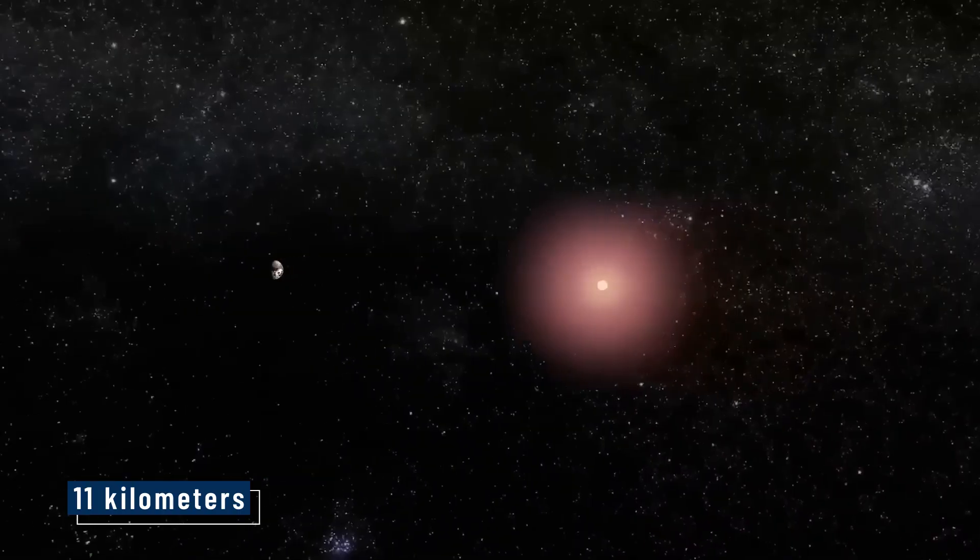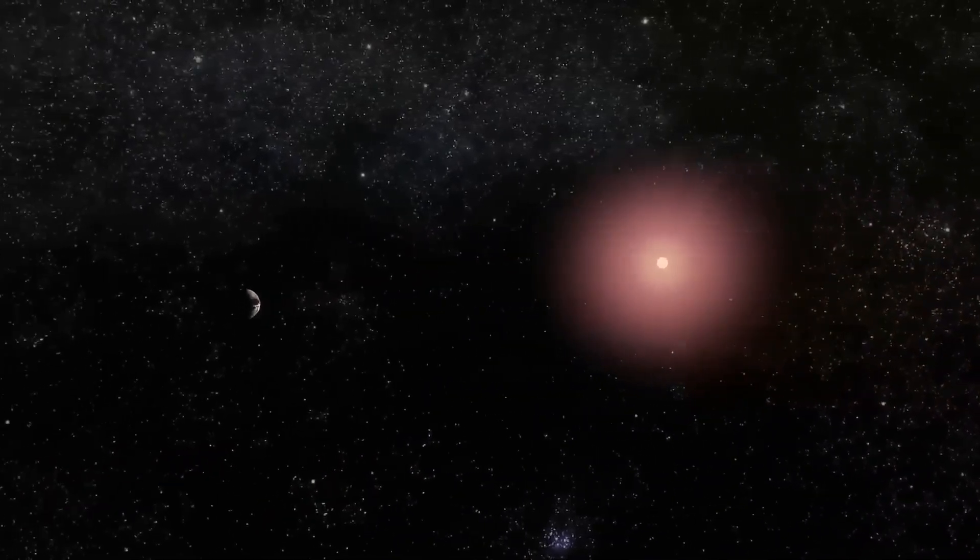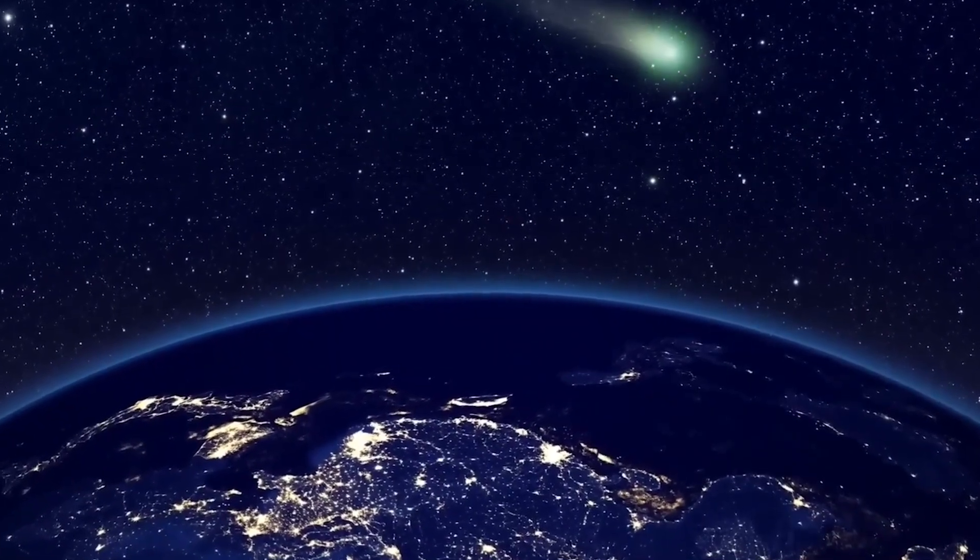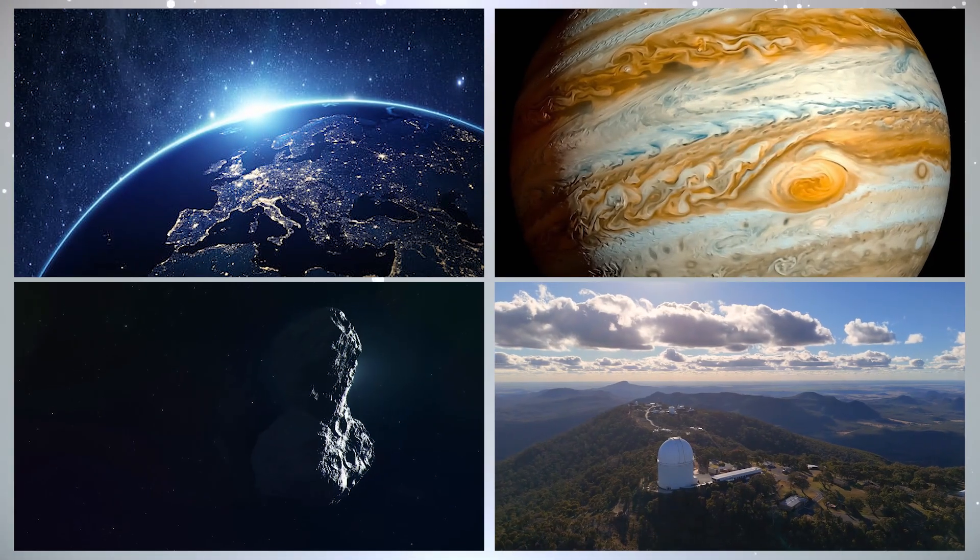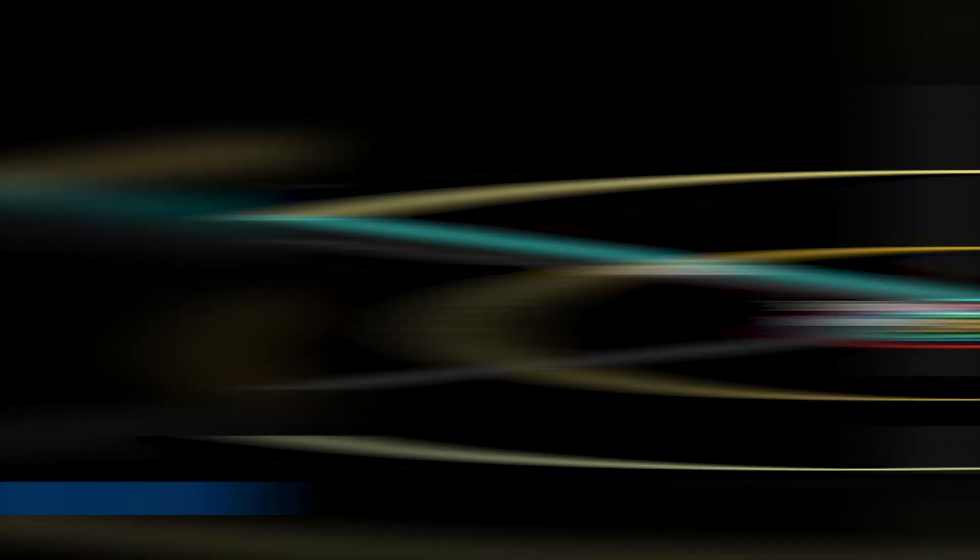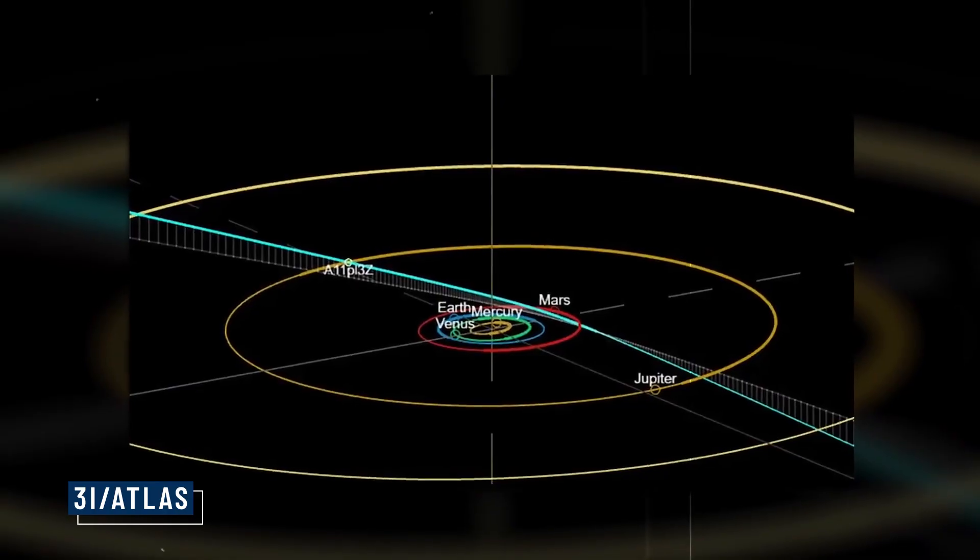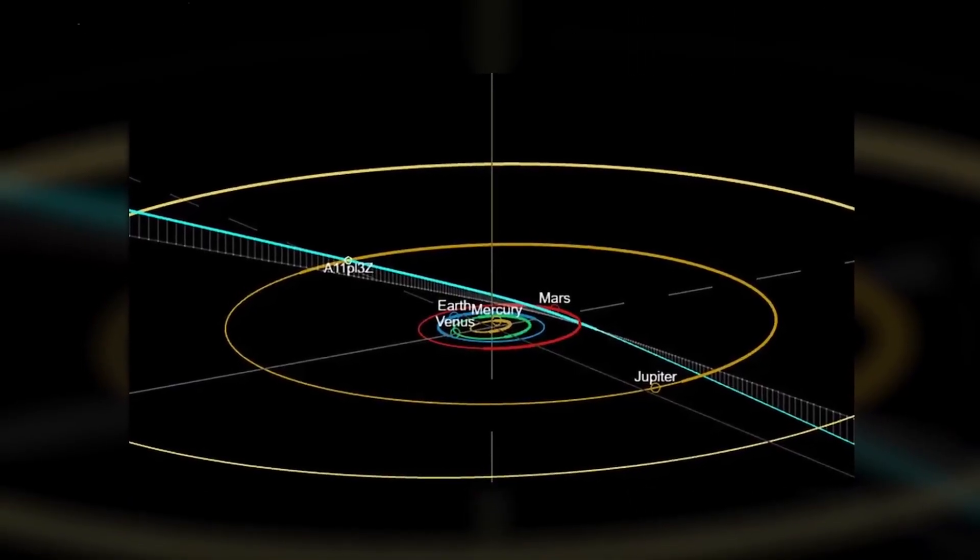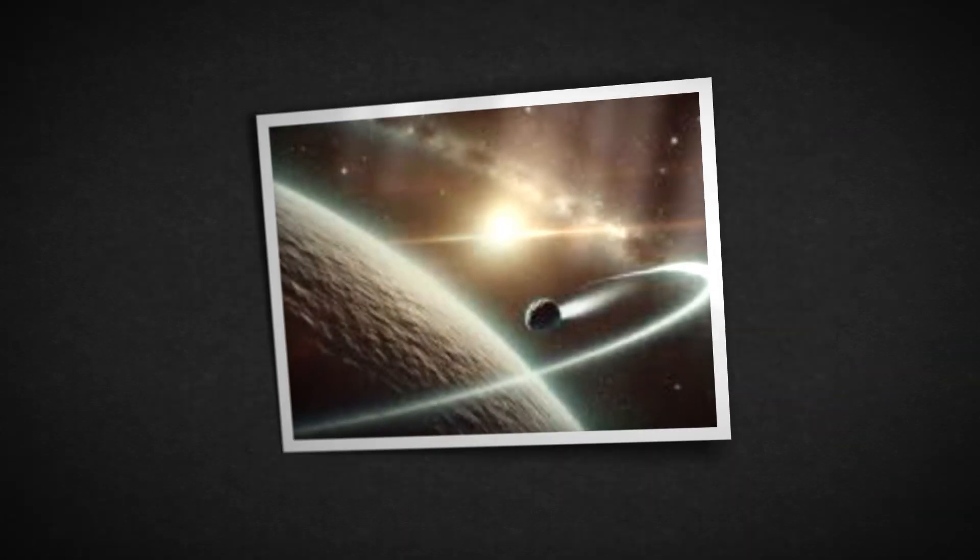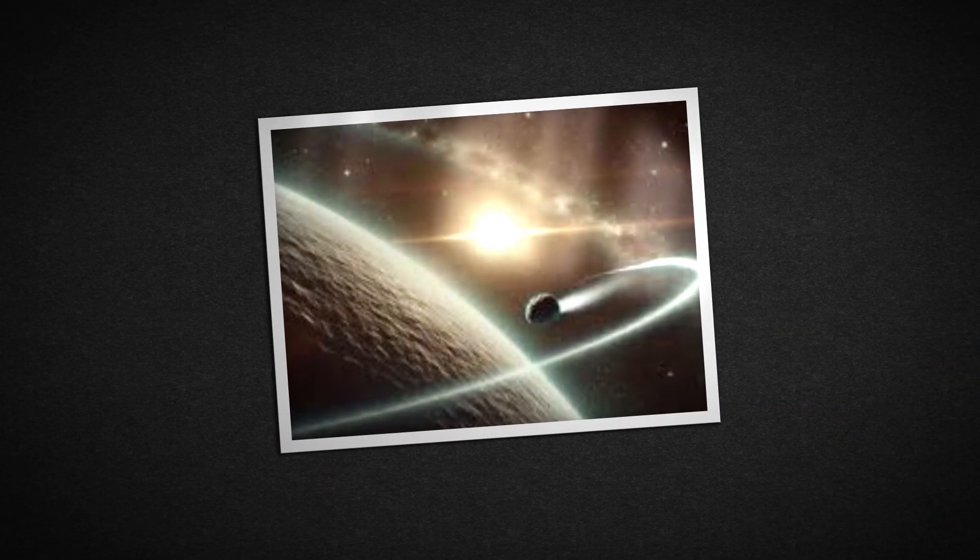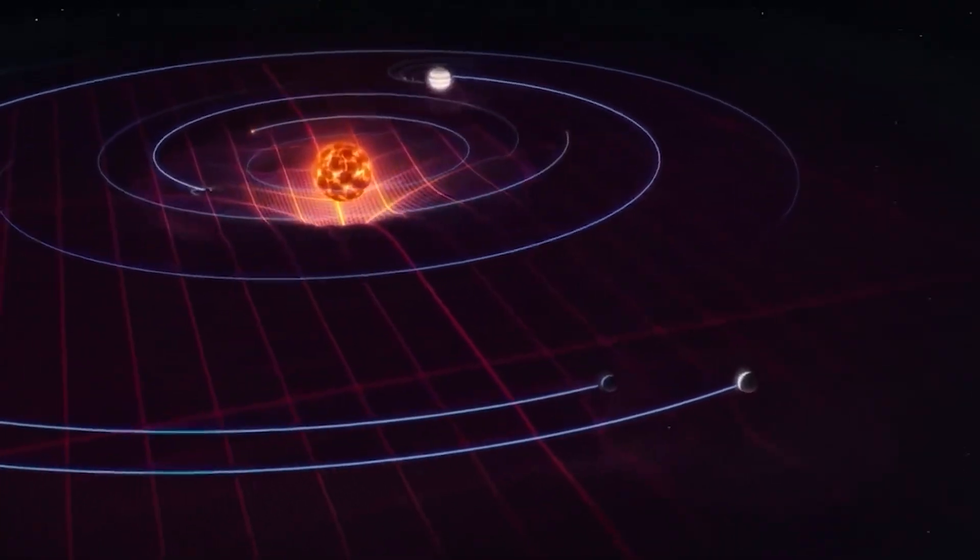A comet, barely 11 kilometers across, behaving like a planet, generating a magnetic field where none should exist. Not Earth, not Jupiter, but an interstellar fragment. 3-I-slash-ATLAS, bending solar wind as if wrapped in an invisible shield. The laws of dynamo theory shattered in one line, and for the first time, whispers spread. If Atlas is magnetic, then it's more than rock and ice. It may be alive.